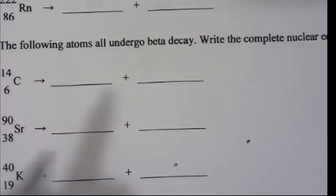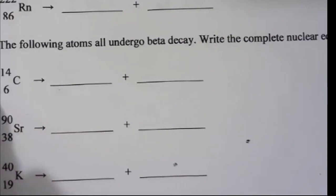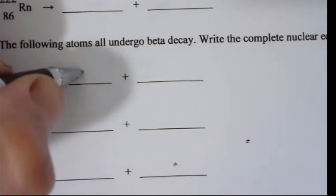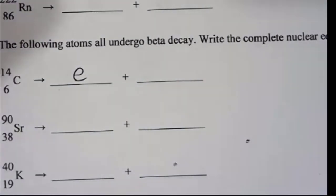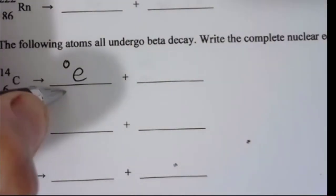Let's write the nuclear equations for these isotopes undergoing beta decay. We express a beta particle as having a mass number of zero.